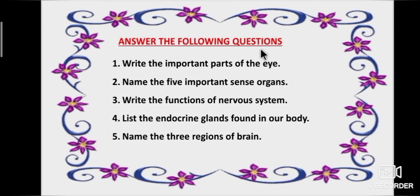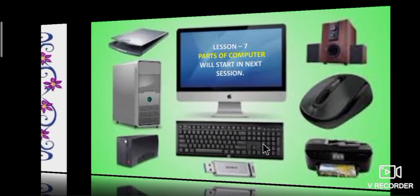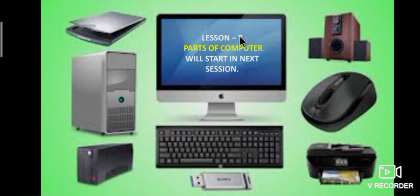Answer the following questions: First, write the important parts of the eye. Second, name the five important sense organs. Third, write the functions of the nervous system. Fourth, list the endocrine glands found in our body. Fifth, name the three regions of the brain. The seventh lesson on parts of the computer will start in the next session. Thank you.